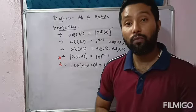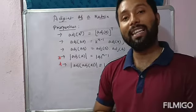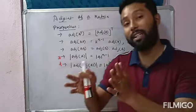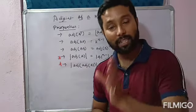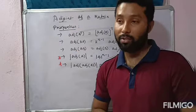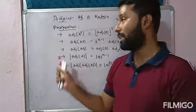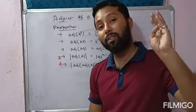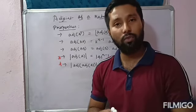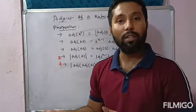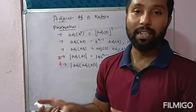In the next class, I will give some short questions related to these properties, and also discuss how to find the inverse of a matrix. To find the inverse, we need the concepts of adjoint as well as singular and non-singular matrices. Today I have discussed singular, non-singular, and adjoint of a matrix. Thank you for today.